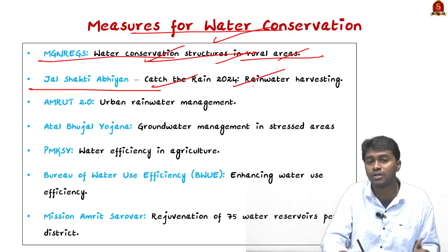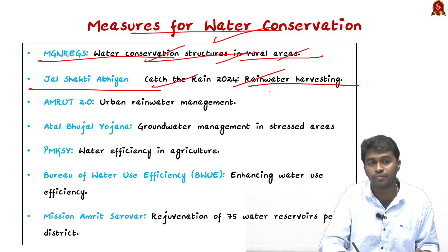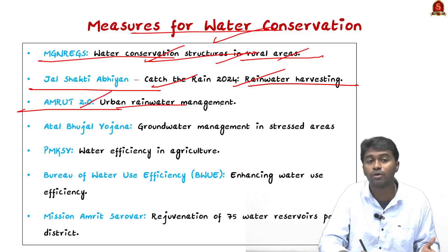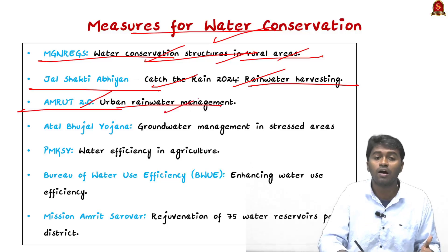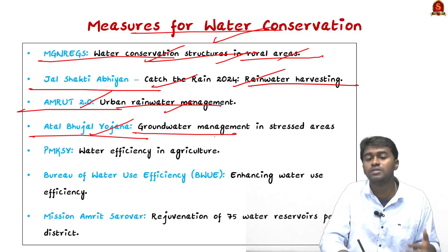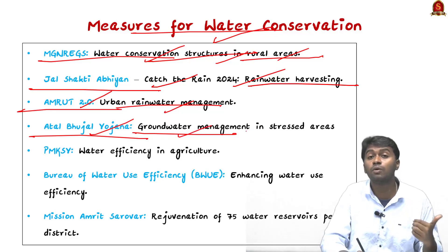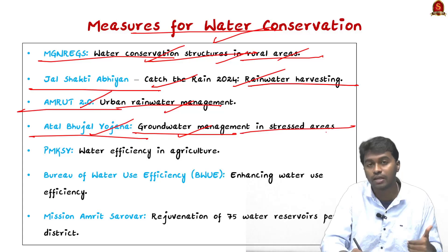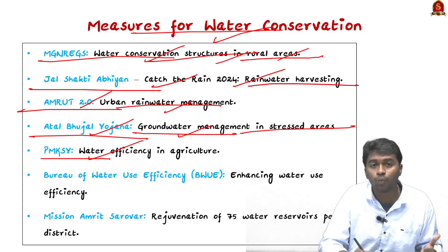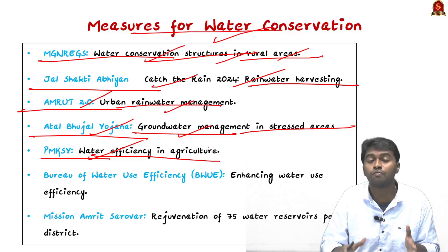The Jal Shakti Abhiyan Catch the Rain 2025 emphasizes community participation, rainwater harvesting, and repairing water conservation infrastructure. AMRUT 2.0 focuses on urban water management. The Atal Bhujal Yojana focuses on groundwater management in over 8,000 water-stressed villages in India. The Pradhan Mantri Krishi Sinchayee Yojana enhances water efficiency in agriculture by reducing water wastage through micro-irrigation technologies like sprinkler and drip irrigation.